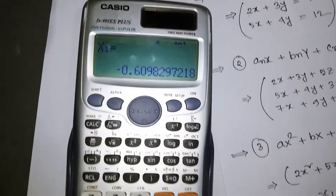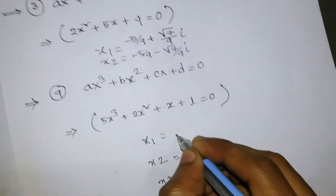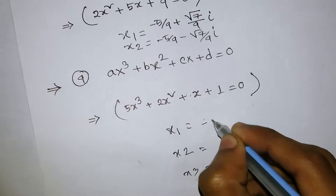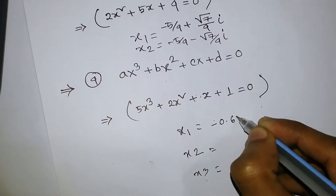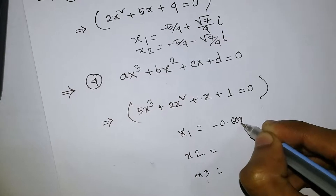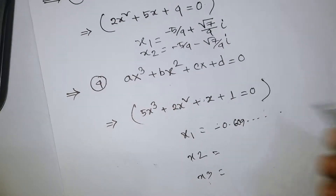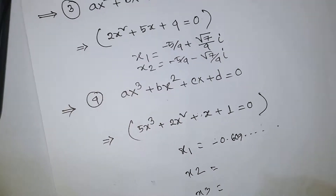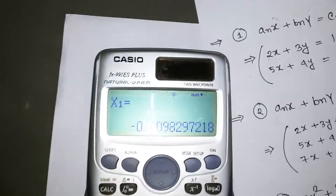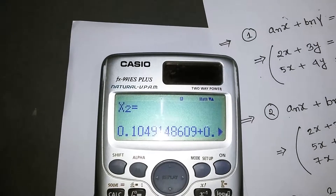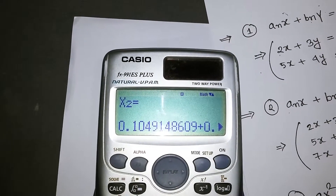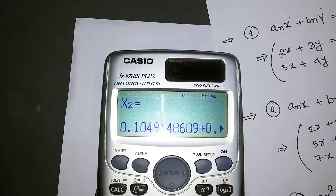The value of X1 is approximately minus 0.609. Press equal again for X2, which is approximately 0.1049.